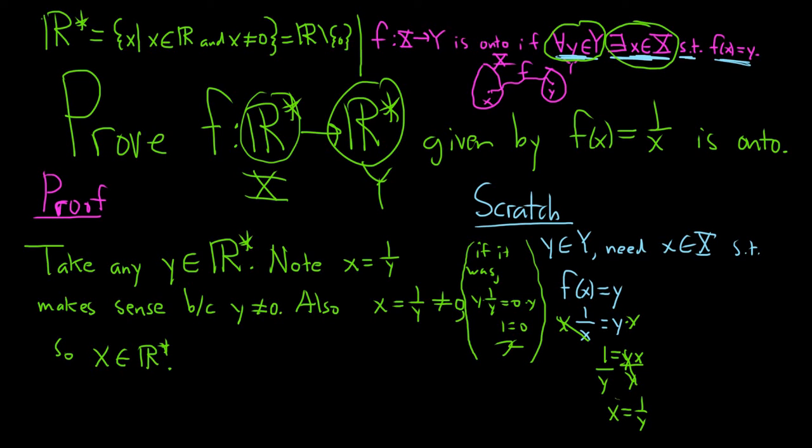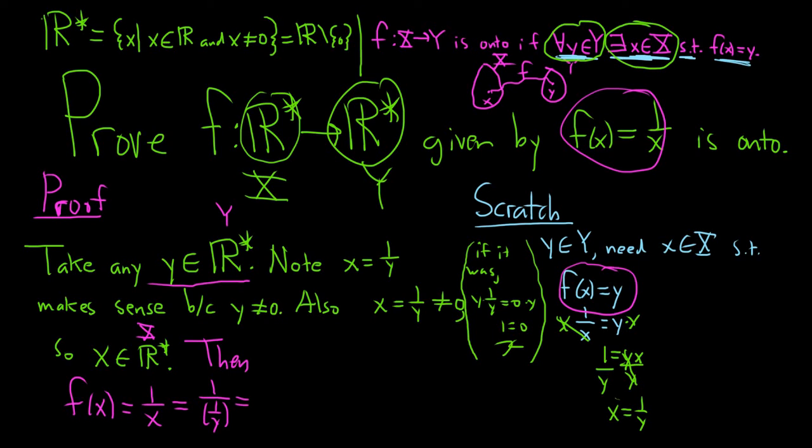Let's backtrack. So we started with a y in capital Y. We showed the existence of x in capital X. Now we just need to verify that f of x is equal to y. Then, f of x is 1 over x. And what's x? Well, x is 1 over y, so this is 1 over 1 over y. But when you divide, you multiply by the reciprocal. This is 1 times y over 1, which is just y.